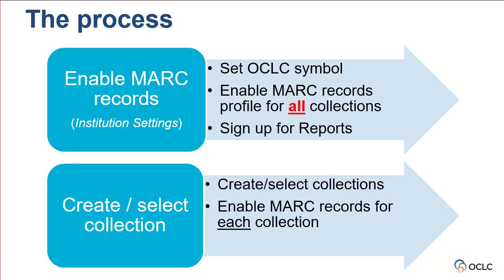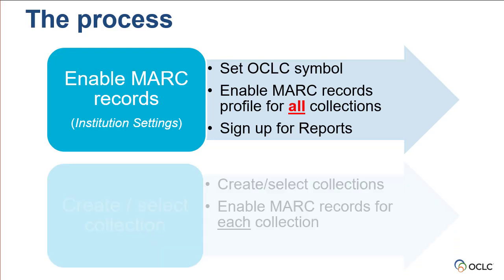The process begins with confirming or selecting the OCLC symbol to use, then choose to enable MARC records for all collections and configure the settings for Collection Manager to deliver WorldCat records for titles in all your library's collections. Last, sign up for reports to be notified when records are ready for download. After you have enabled and configured MARC records for all collections, you can create or select collections and enable MARC records for each collection. This video will focus on enabling and configuring the MARC records profile for all collections in Collection Manager.